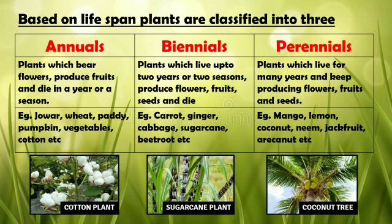Biennials are plants which live up to two years or two seasons, produce flowers, fruits and seeds, and then die. Examples include carrot, ginger, cabbage, sugarcane, beetroot, etc. The picture shown is a sugarcane plant.